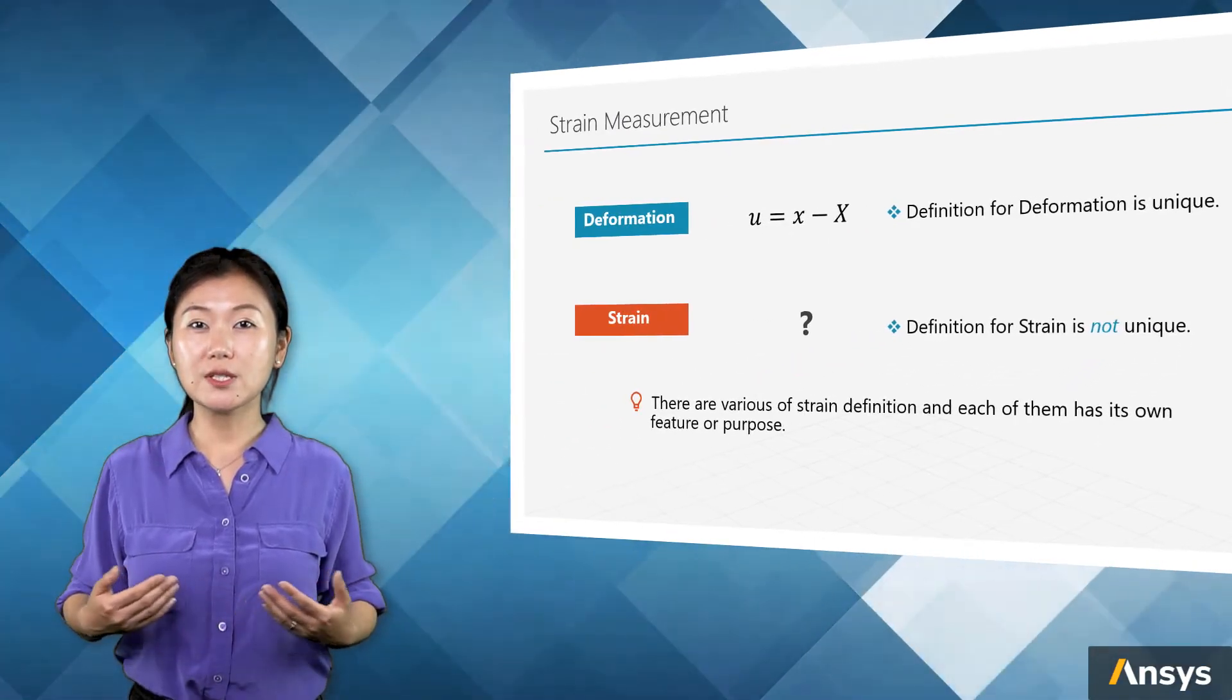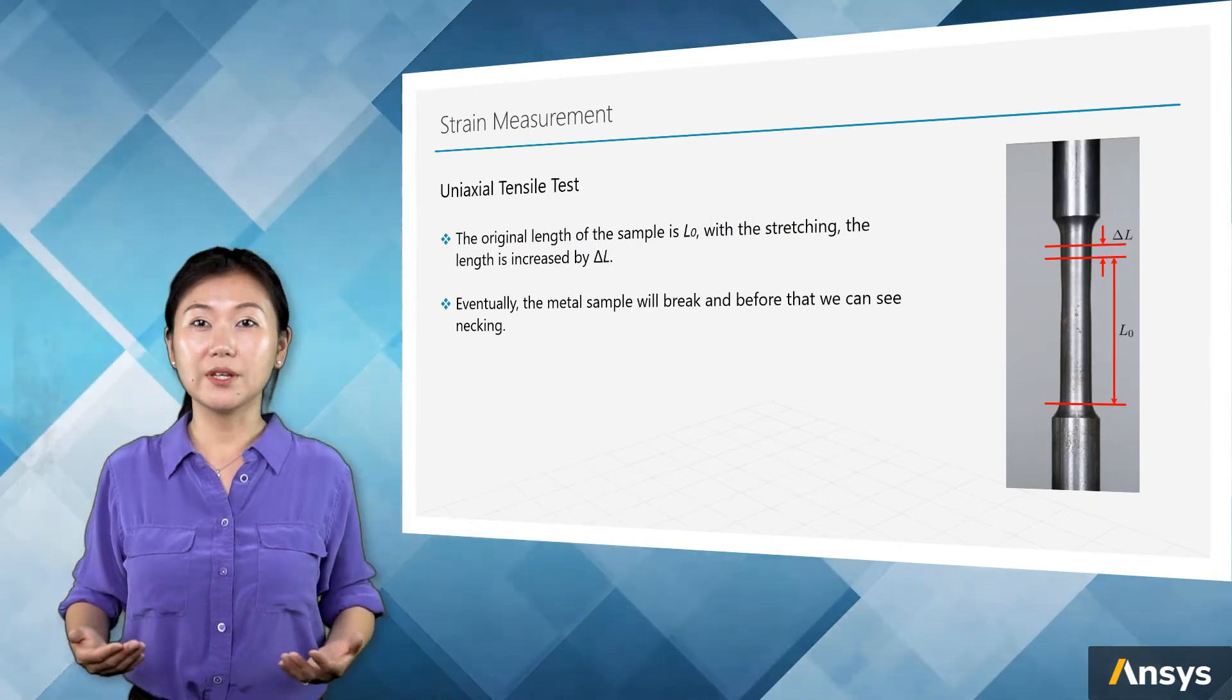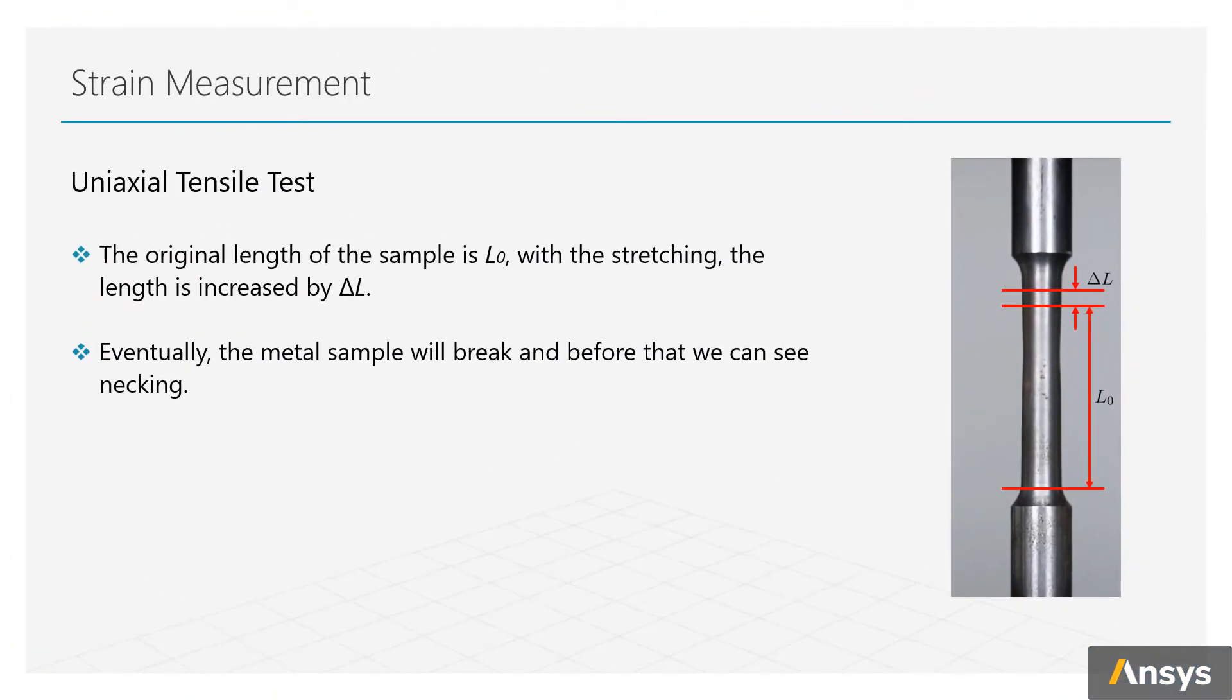Here, we'll use the uniaxial tension test to explain one-dimensional strain. The uniaxial tension test is one of the most commonly used tests in the lab. A metal sample is held fixed on one end and stretched from the other end. The original length of the sample is L0. With the stretching, the length is increased by delta L.